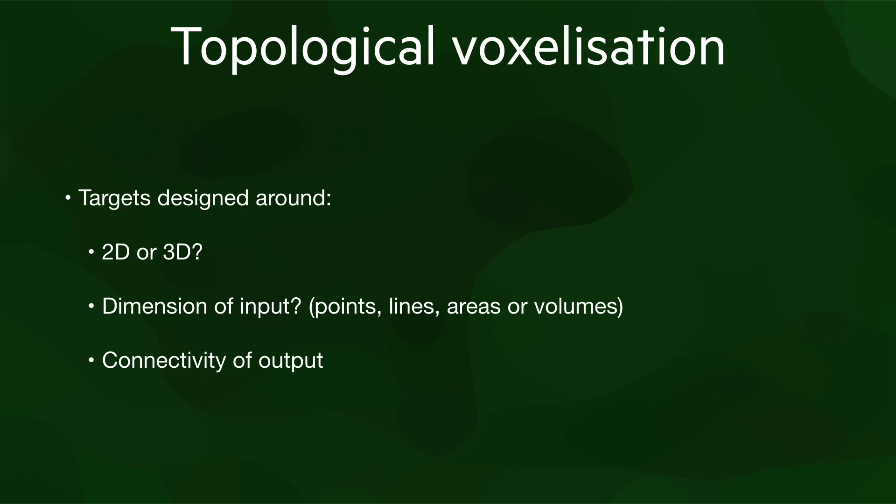Topological voxelization is based around performing a series of intersection tests between the input data and specially designed targets inside every voxel. If any of the targets of the voxel intersects with an object in the input data, the voxel is considered to be part of that object.